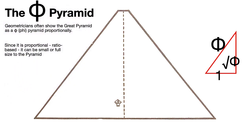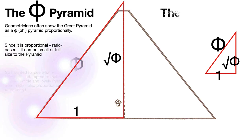Since it's proportional, it is ratio-based, it can be small or it can be full size. So there's the triangle, and the half base would be 1. And this bigger triangle, the hypotenuse would be Phi, and the height would be the square root of Phi. Proportionally, it can be big or small. Now the Pi Pyramid that I want to make. I wanted to see what would happen if I attempted to make an equally simple and lovely pyramid from Pi, also proportional and ratio-based.